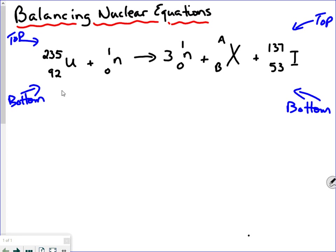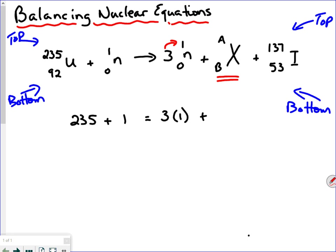Let's just do some quick math with this. Over on the reactant side of the equation — that would be the left-hand side — we have uranium with 235 as its atomic mass, plus a neutron with an atomic mass of 1. That is equal to the product side, which is a little more complicated. We have three neutrons, each with an atomic mass of 1, that's 3 times 1. Plus we have some element here — we don't know what this element is, this is element X. We're going to have to figure out what X is.